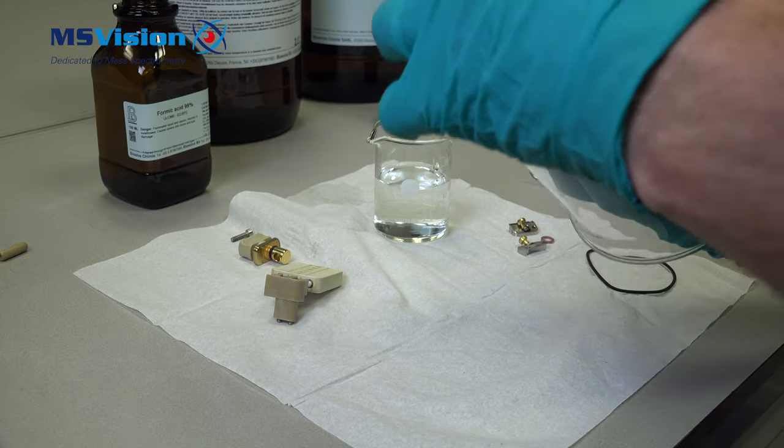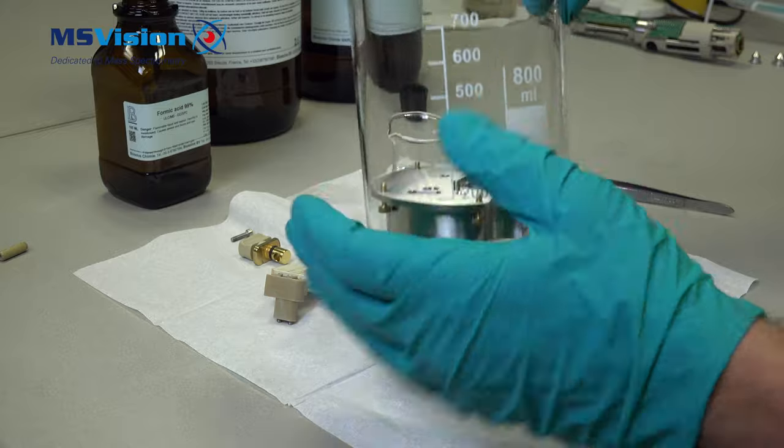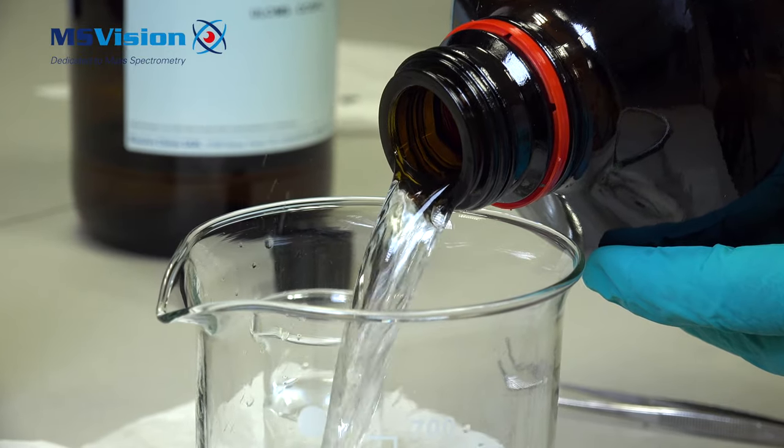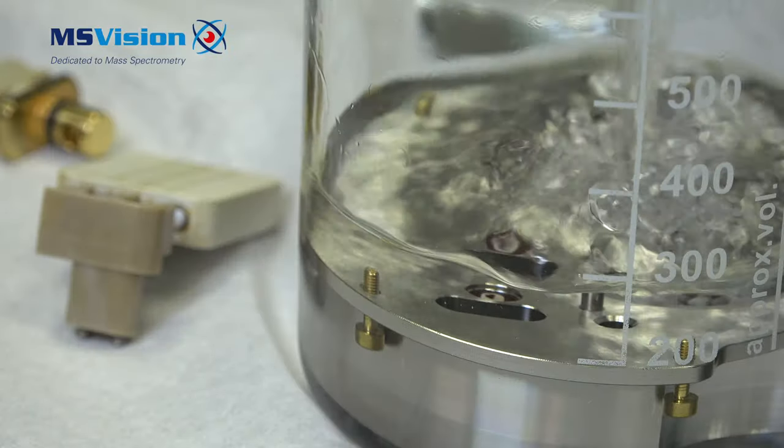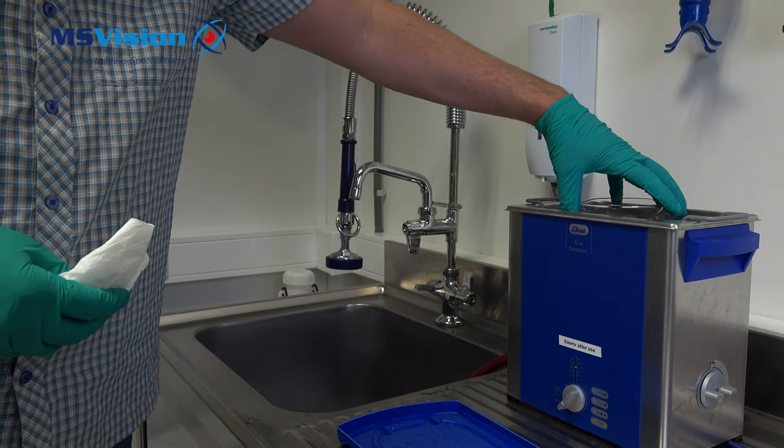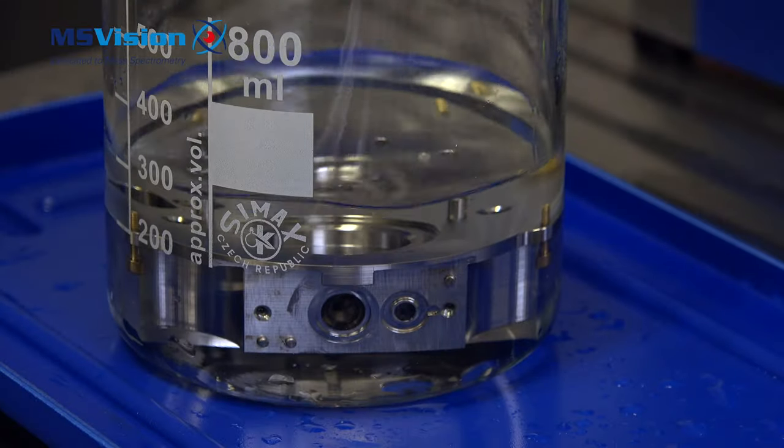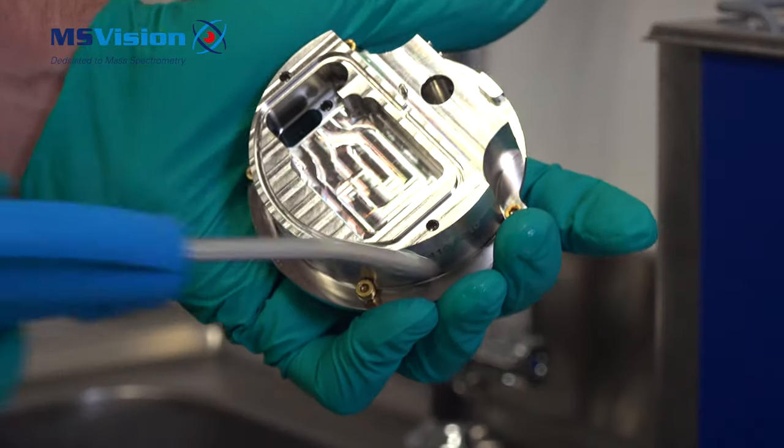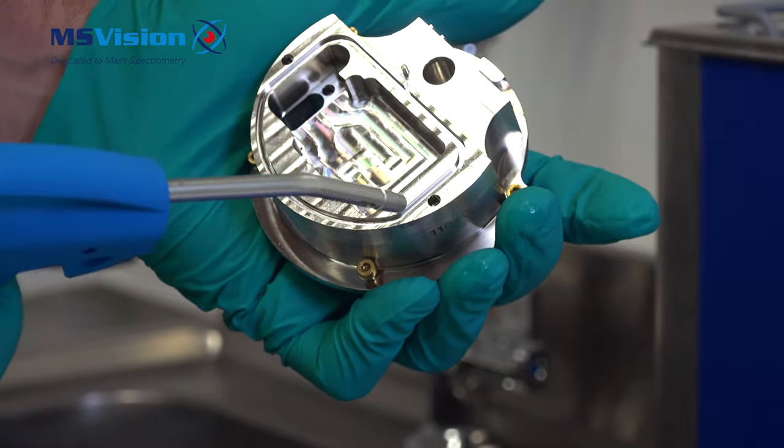The final step is to take out the glass beaker. Dry quickly using nitrogen to prevent methanol spots from forming.